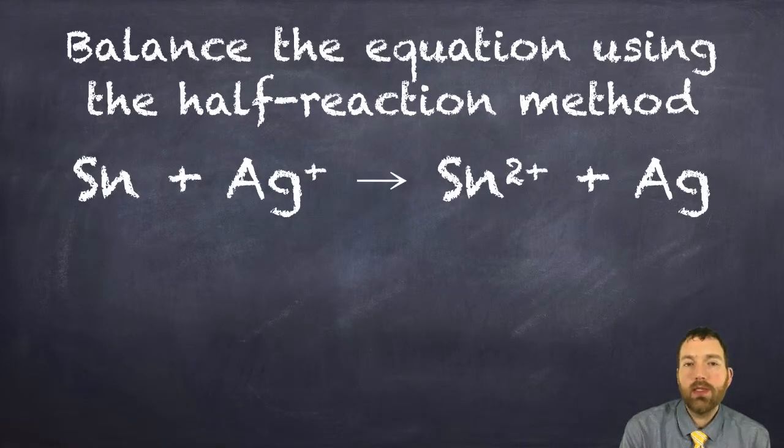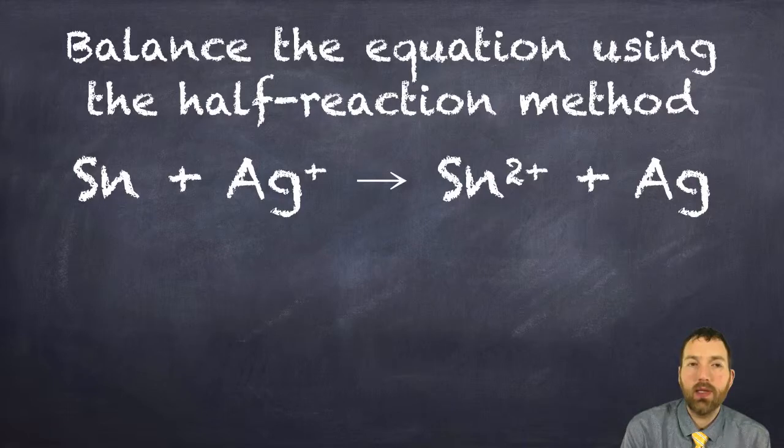In this equation here, it's a very simplified equation but it's going to get the point across. In this example, a tin atom and silver ion are reacting and we get a tin ion and a silver atom.